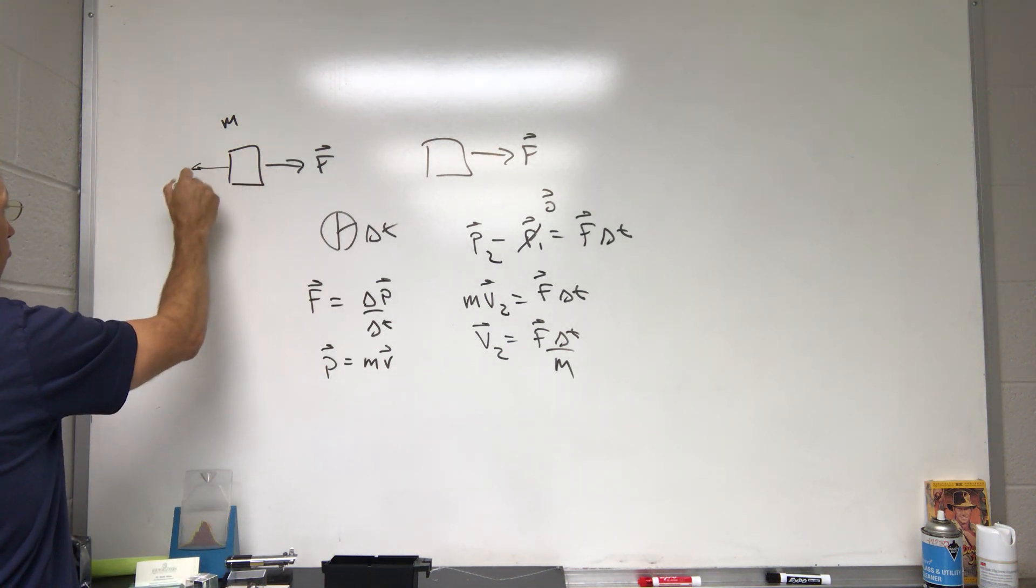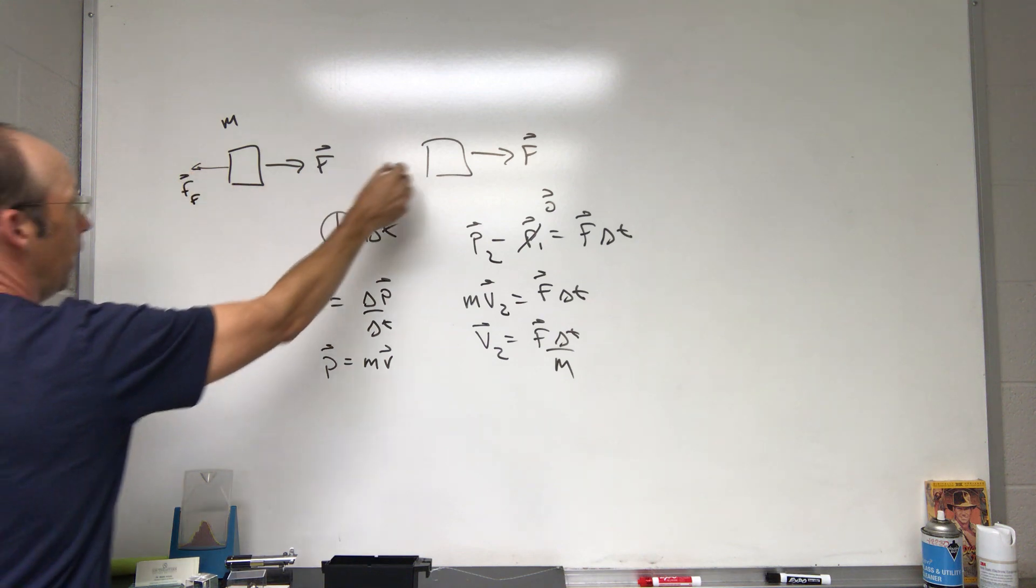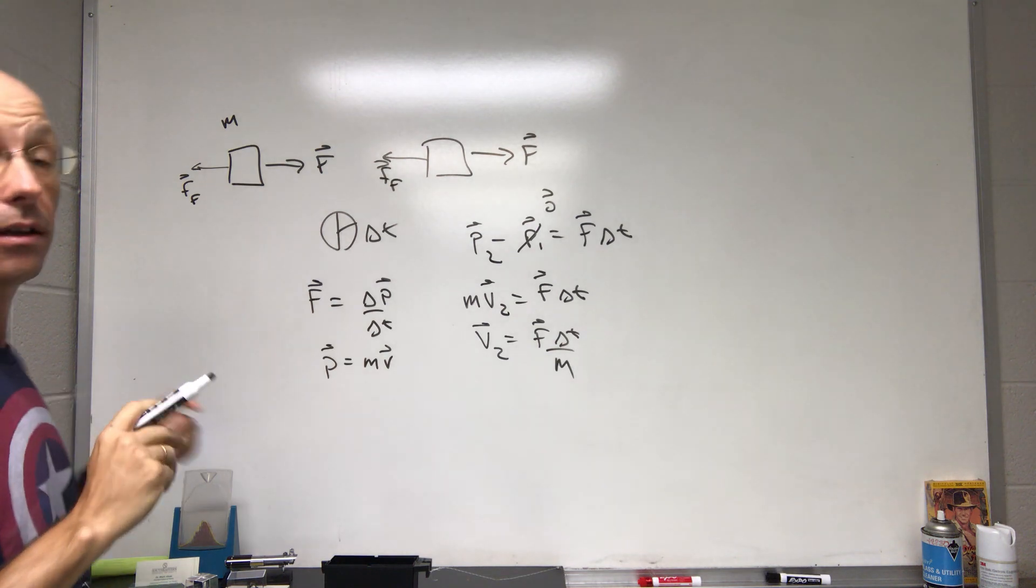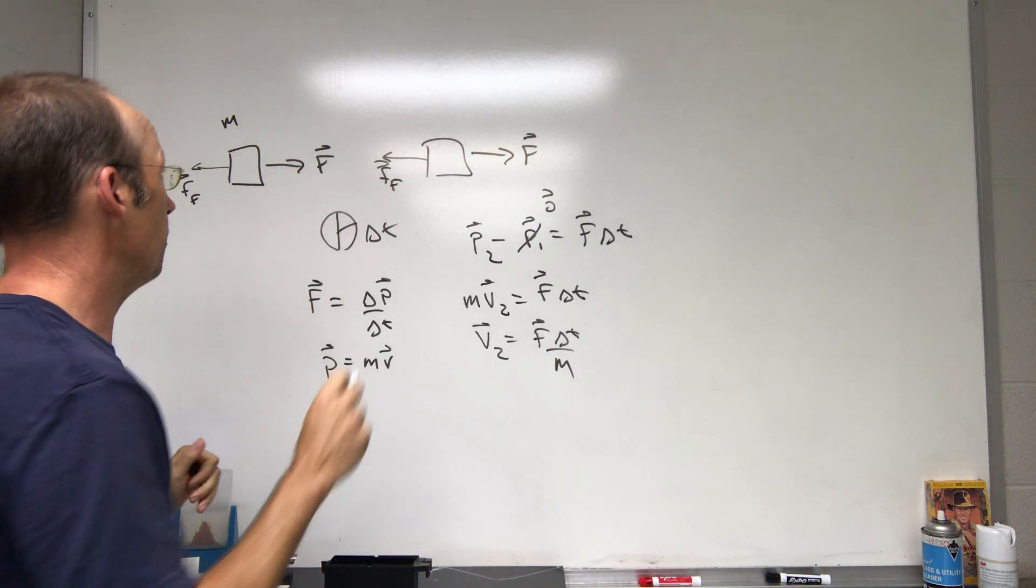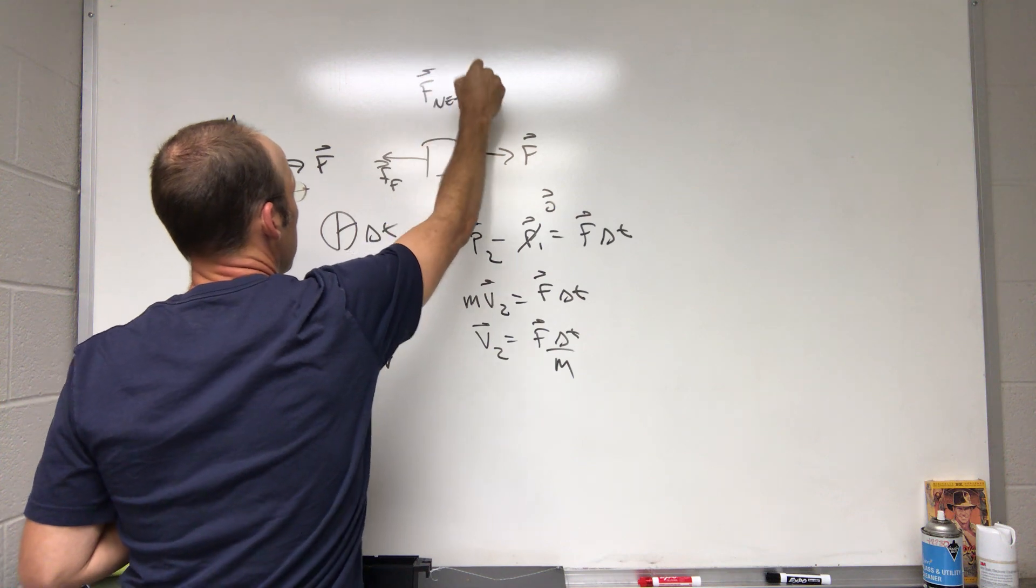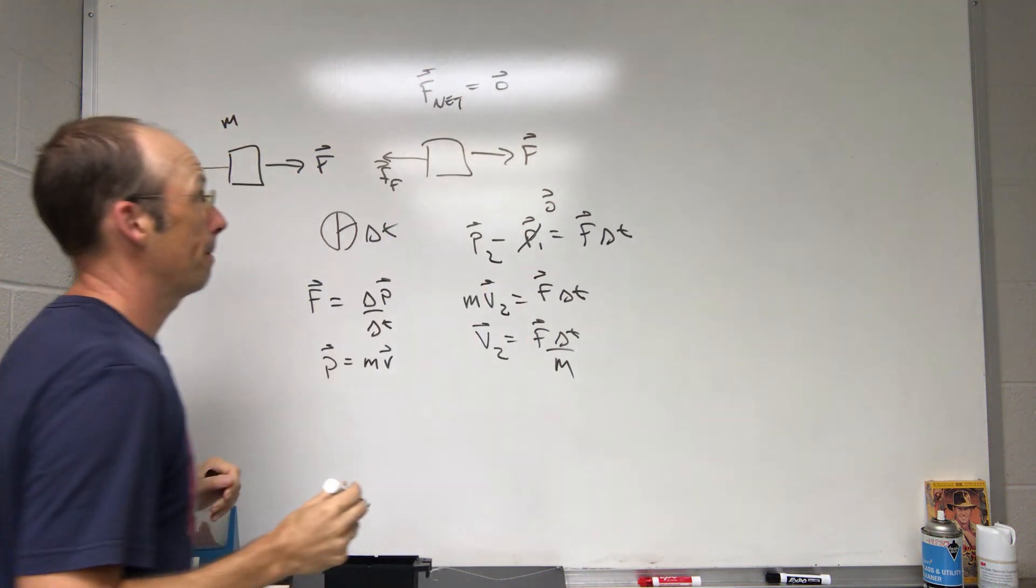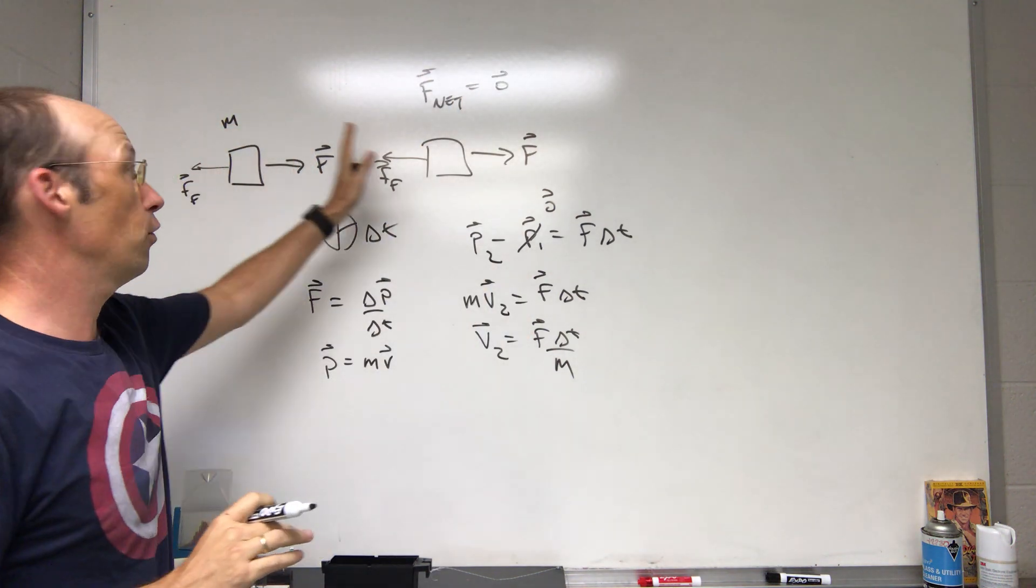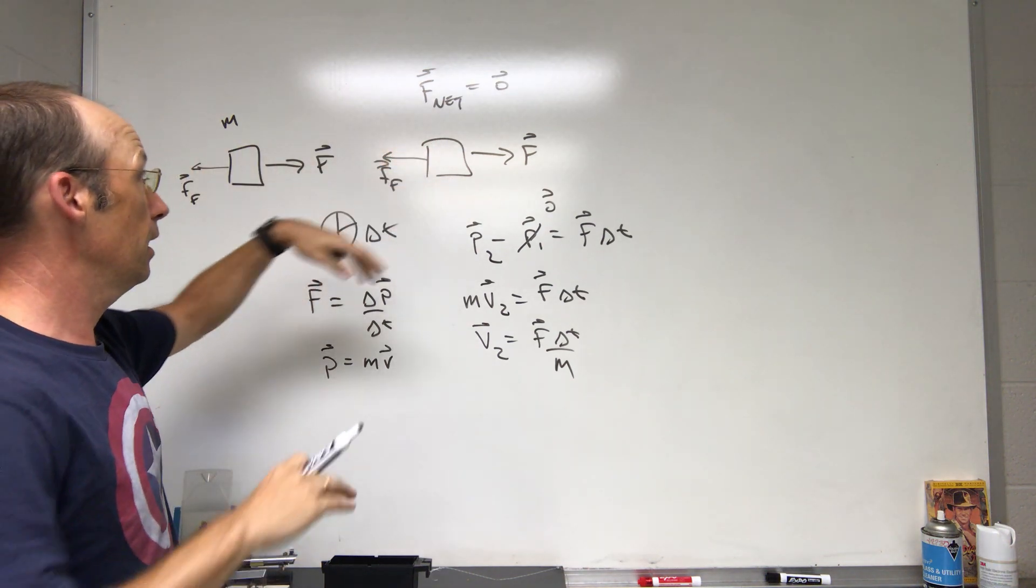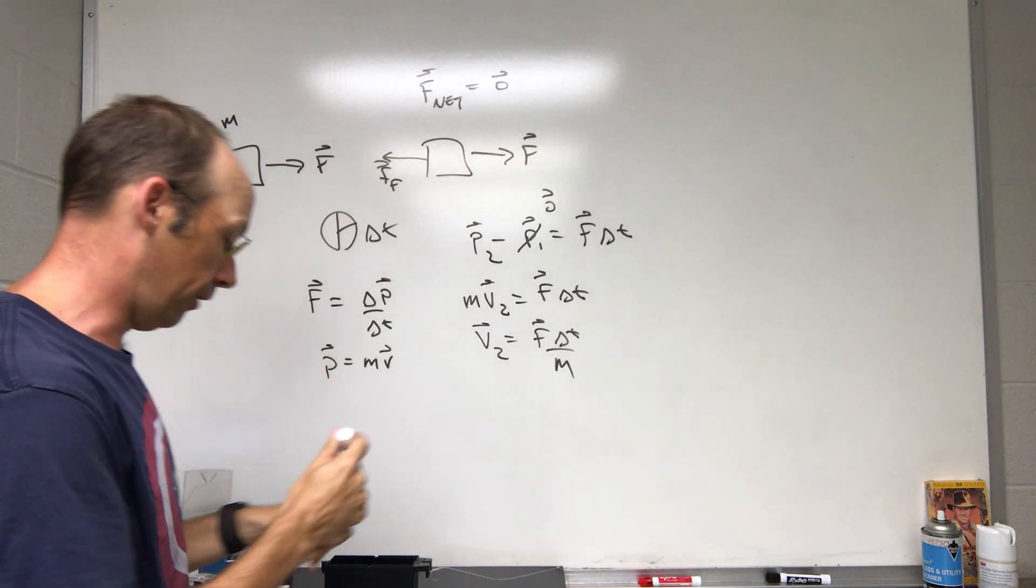Now what if I have some force that way and then I have some frictional force pulling back that way? If those two forces are the same, then F net is zero. As this thing moves, the speed doesn't change. It just moves along at constant velocity and the net force is zero.